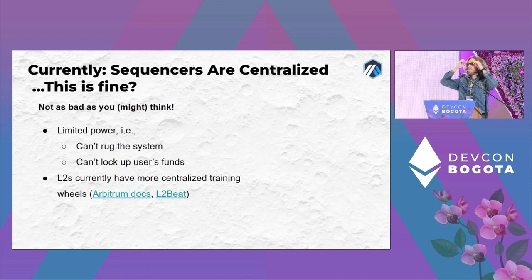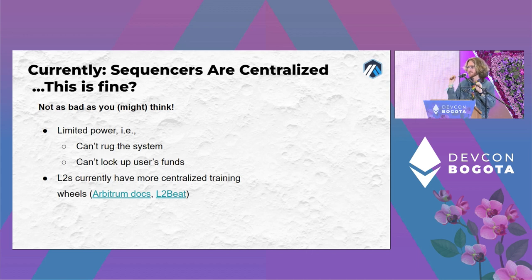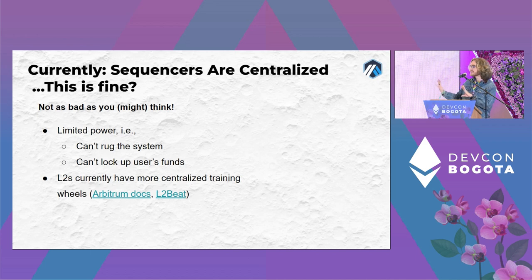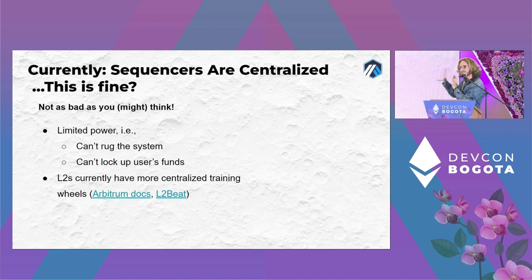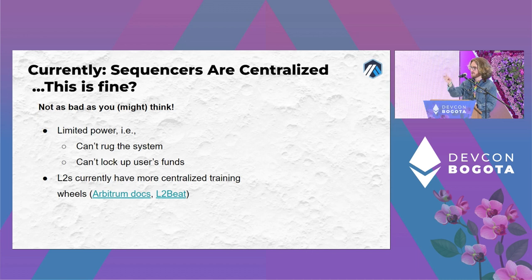We get asked a lot about decentralizing the sequencer — it's probably the most frequent question about progressive decentralization. But it often comes from a bit of a misunderstanding. There are two things to say. First, it might not be as bad as it initially appears: centralized sequencers have very limited and circumscribed power — they can't simply steal money from the system, and they can't lock up user funds forever.